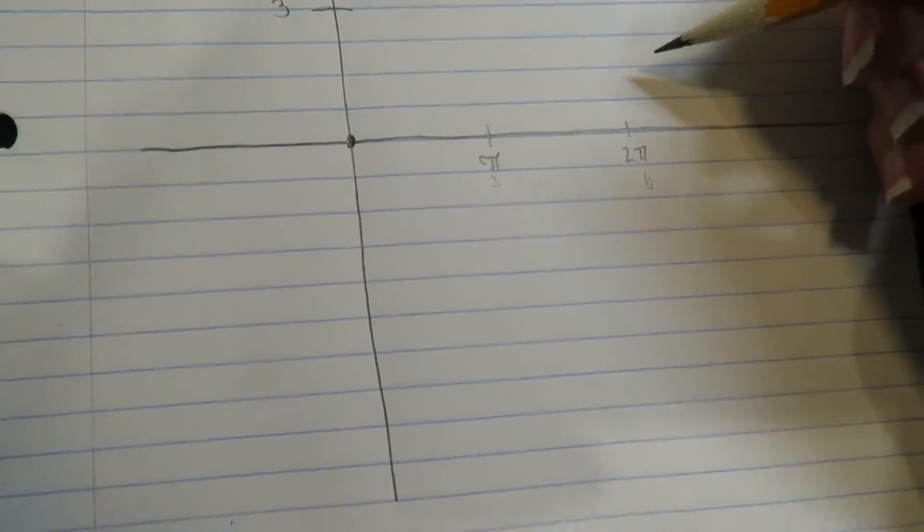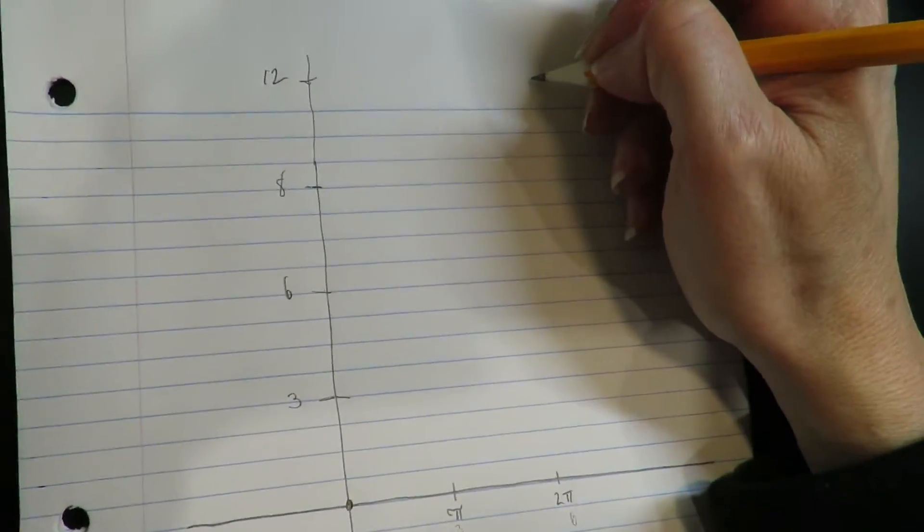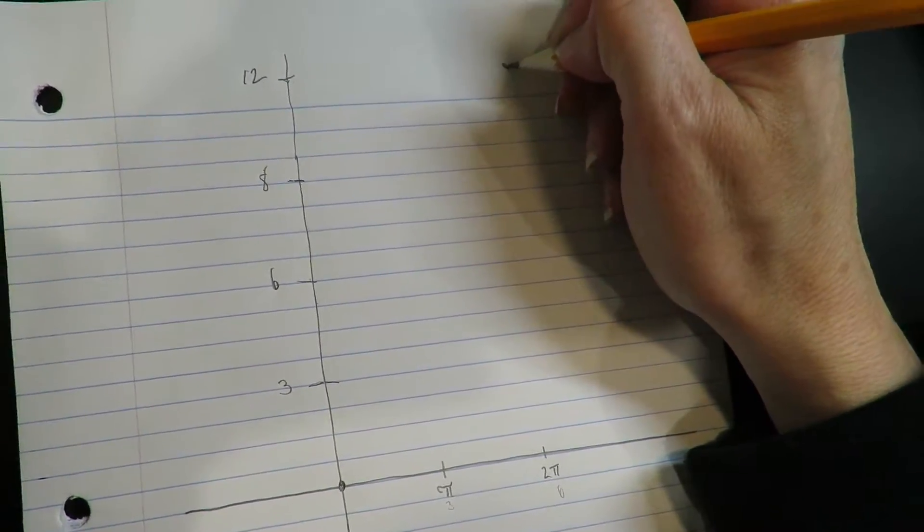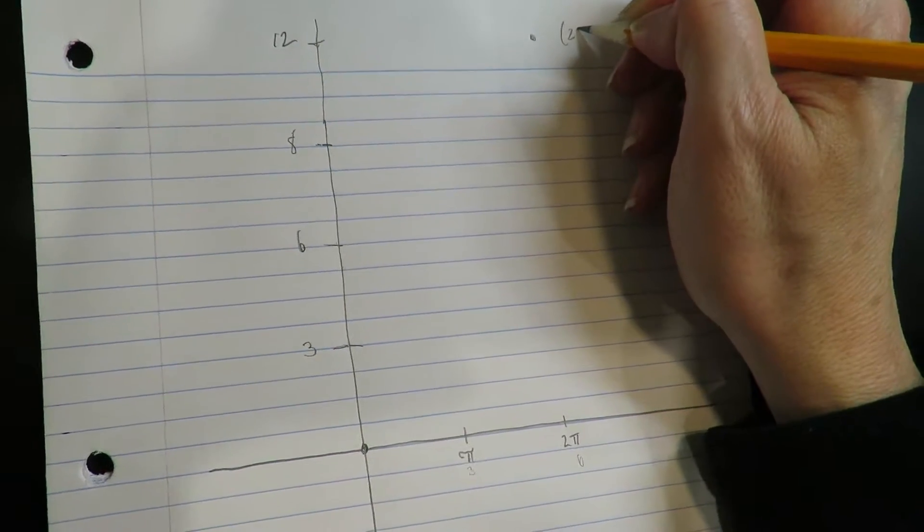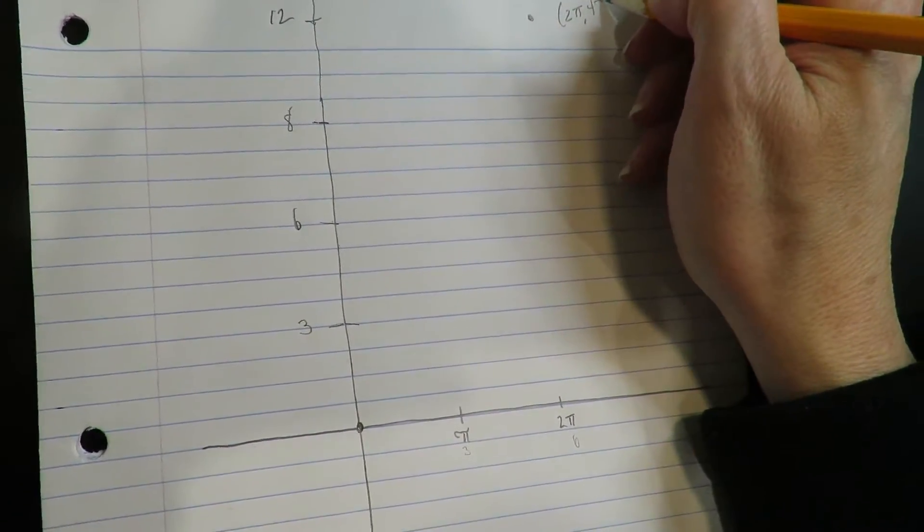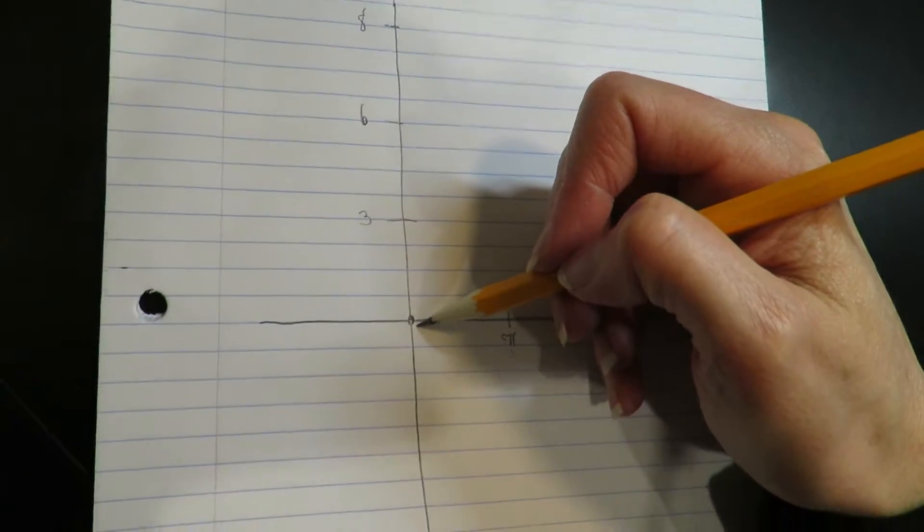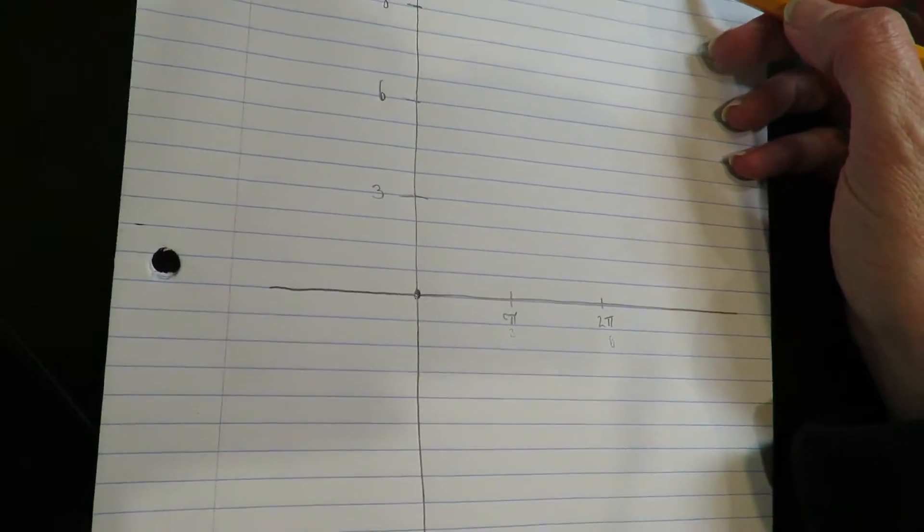So 2π and 4π. 2π, 4π. All right, that's the endpoint. The left endpoint, the right endpoint.